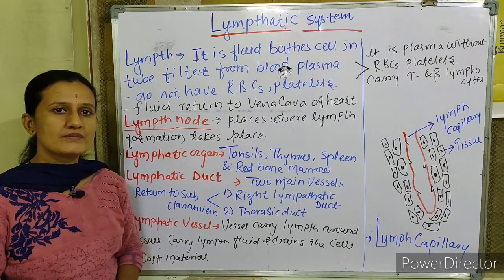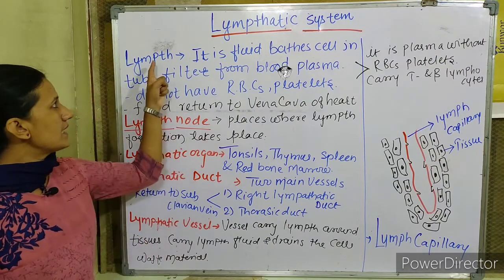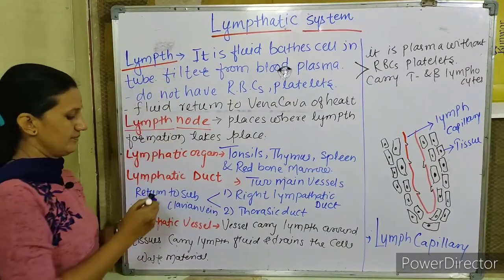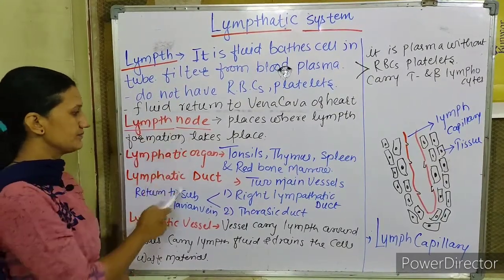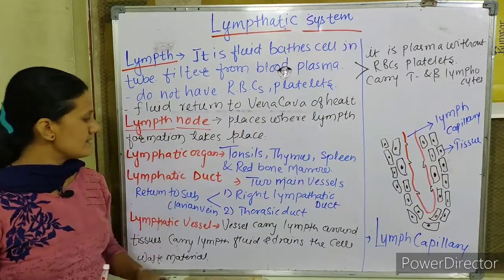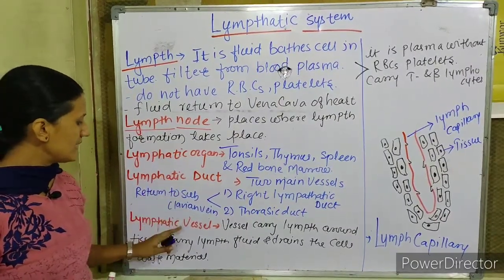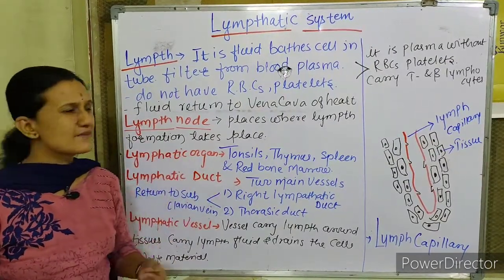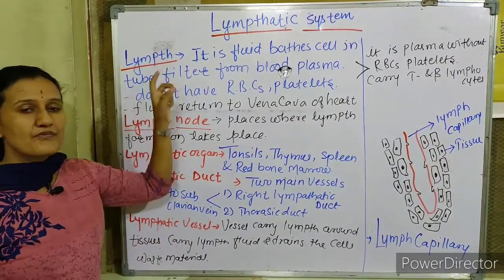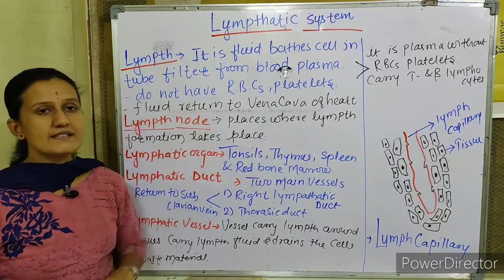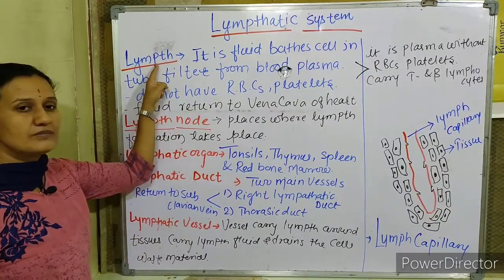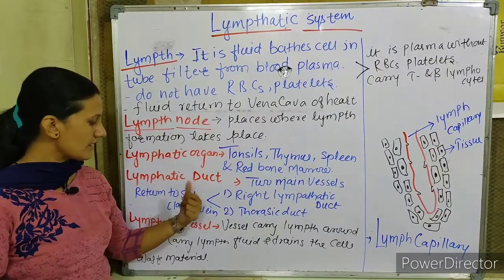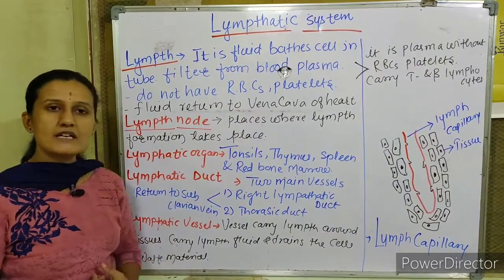Today we are going to learn about the lymphatic system, which has four main components: lymph, lymph nodes, lymphatic organs, lymphatic ducts, and lymphatic vessels. The four main points of the lymphatic system are lymph, lymph node, lymphatic duct, and lymphatic vessels.